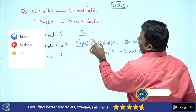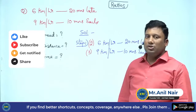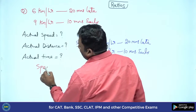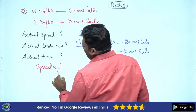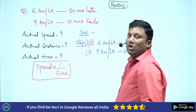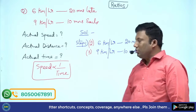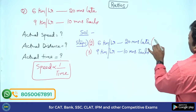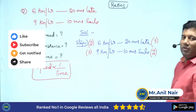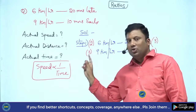Speed ratio is 2:3 — three 2s are 6, three 3s are 9. Now, speed is inversely proportional to time. So if speed ratio is 2:3, the time period ratio will become 3:2.